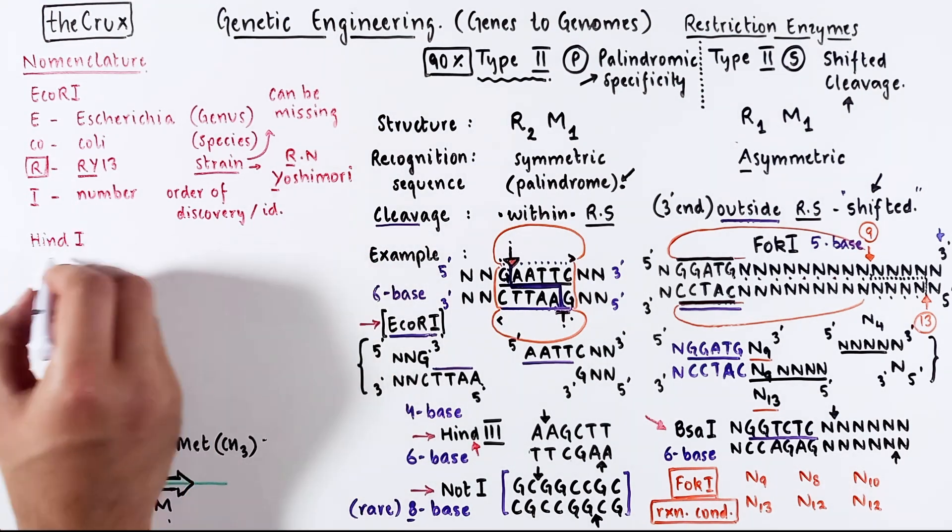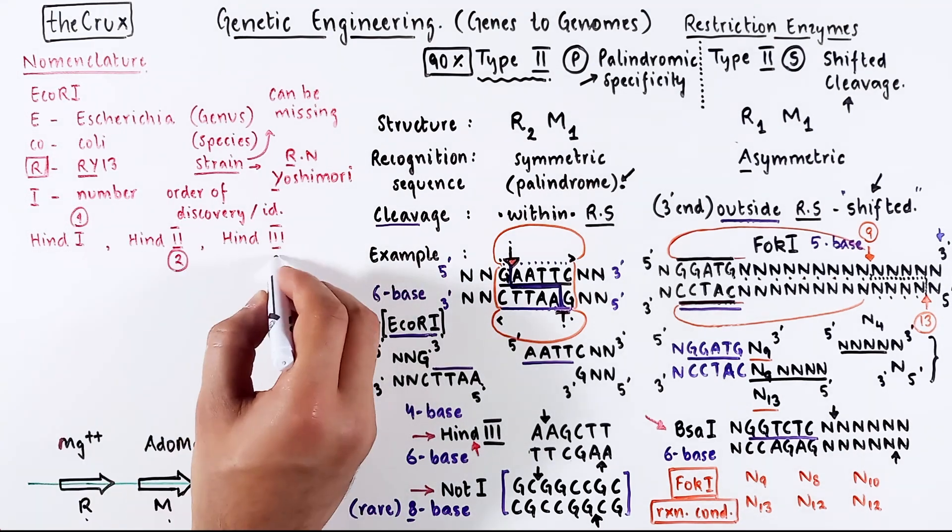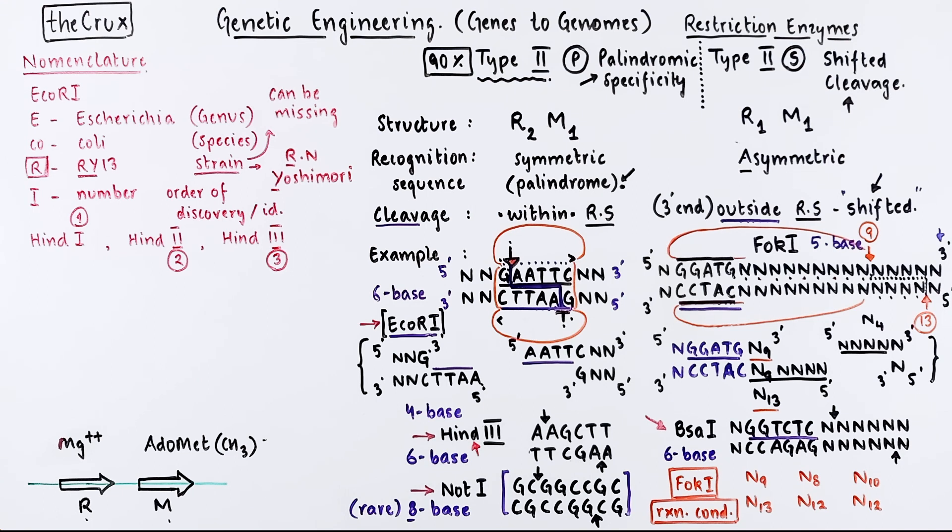For instance, there is HIN1, 2, and 3. The number tells you that HIN1 was the first identified enzyme in the HIN sequence of enzymes.